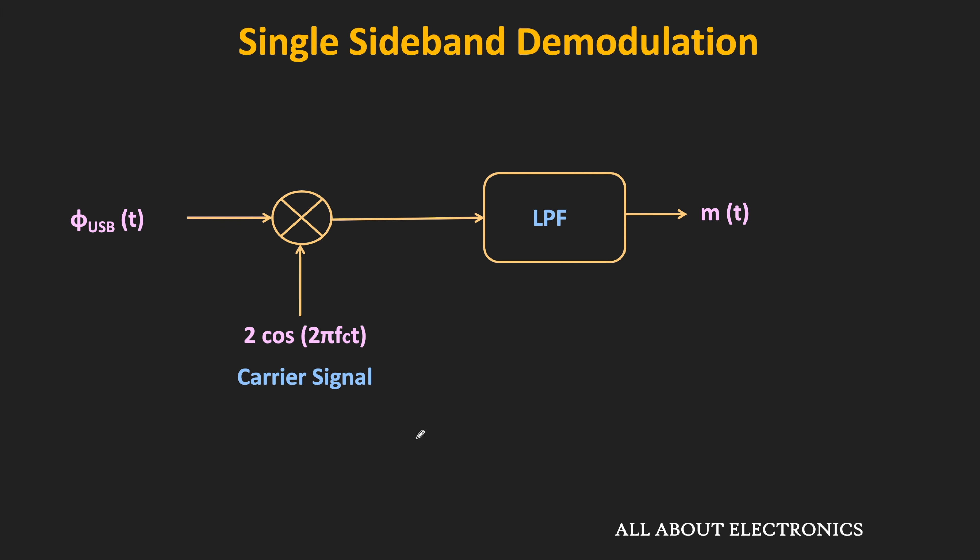At the receiver end, we need a carrier signal of the same frequency and phase as used for modulating at the transmitter. If we can generate that carrier at the receiver, then by multiplying the received modulated signal with the carrier and passing it through a low-pass filter, it is possible to recover the message signal.